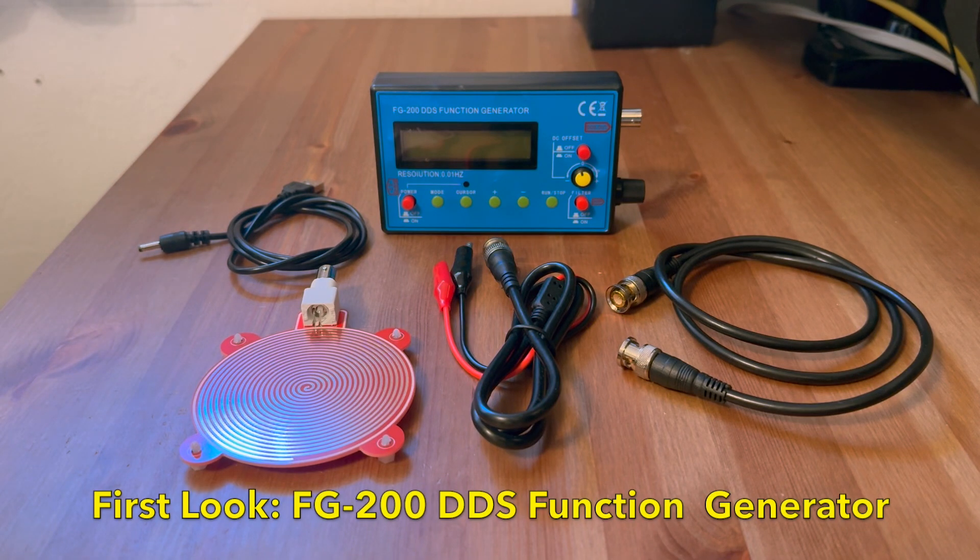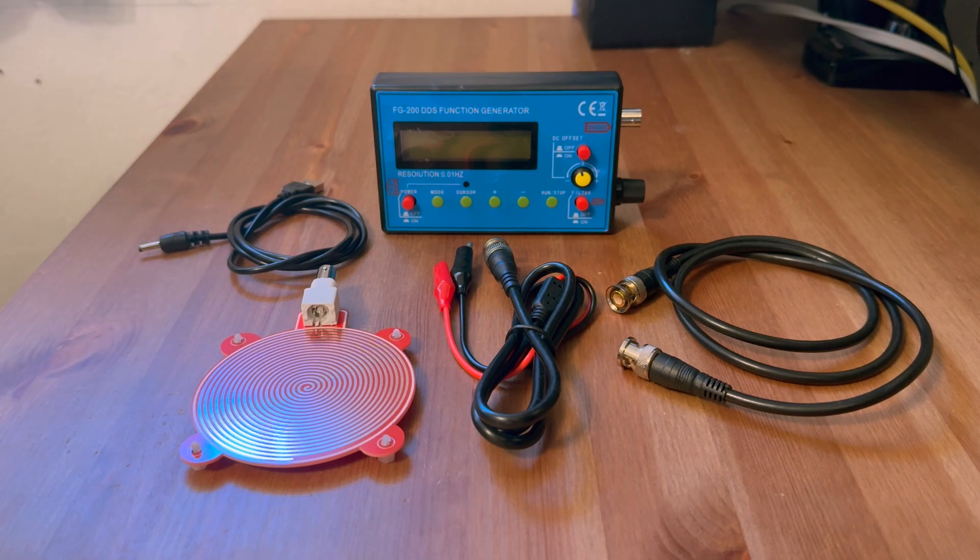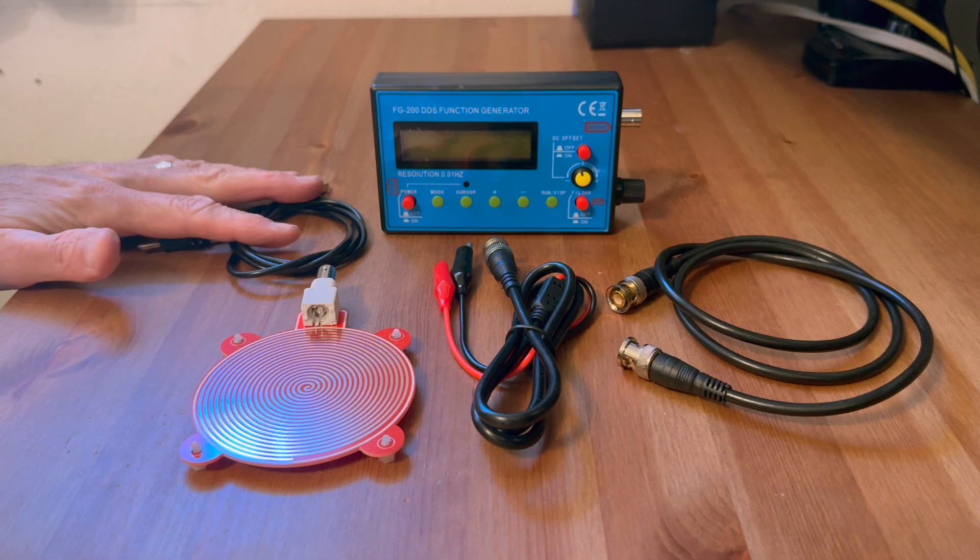So this is the first look at the FG200DDS function generator. The one I bought comes with these components, which is the power cable.